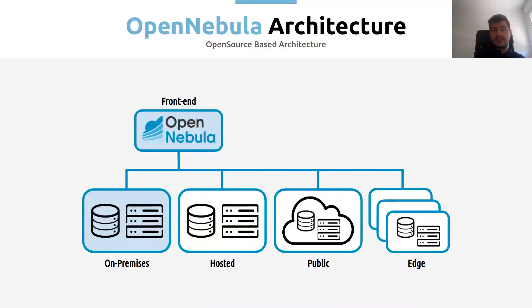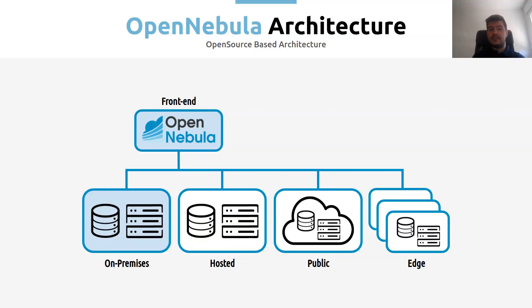First of all, I'd like to start by reviewing at the highest level the OpenNebula architecture. On every OpenNebula deployment, we will have at least a front-end node. This is where the OpenNebula service runs, and it only needs to run on this front-end node, not on the hypervisor nodes. This front-end node will be able to manage different virtualization infrastructure setups.